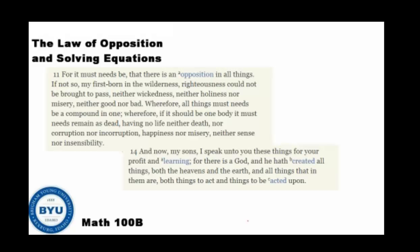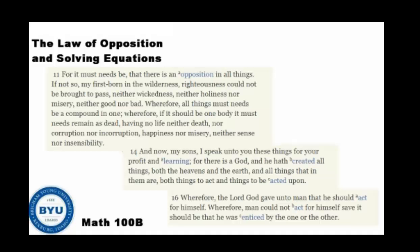In verse 14 it says: 'And now, my sons, I speak unto you these things for your profit and learning.' Understanding the law of opposition is for our profit and learning about the entire plan of Heavenly Father. 'For there is a God, and he hath created all things, both in the heavens and the earth, and all things that are in them, both things to act and things to be acted upon.' In verse 16: 'Wherefore, the Lord God gave unto man that he should act for himself. Wherefore, man could not act for himself, save it should be that he was enticed by one or the other.' So there had to be opposition in all things so that we could have agency — so that we could decide and make choices in this life to prepare ourselves to return to live with our Heavenly Father.